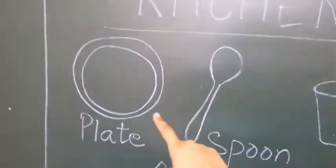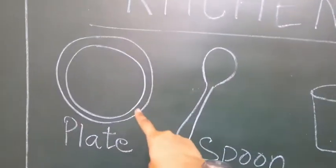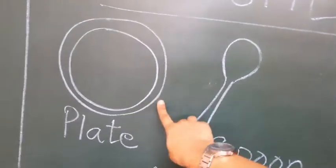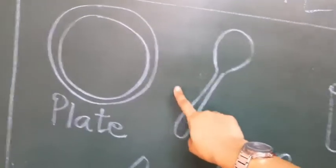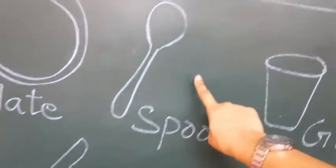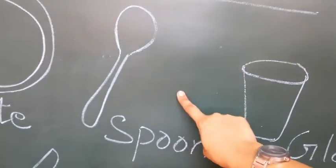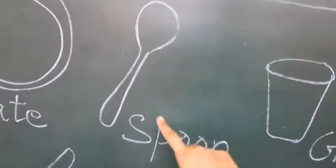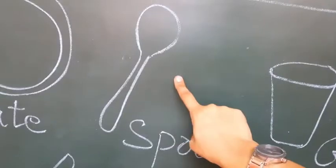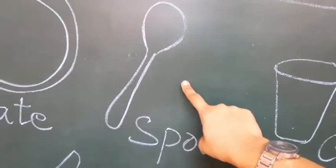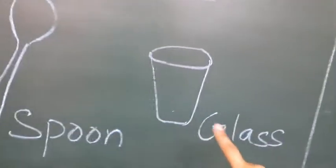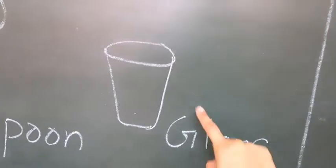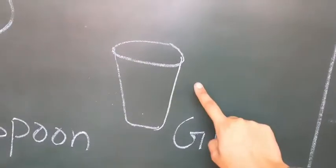The first thing is plate. This is a plate — you eat food in a plate. Next is spoon. You have food with a spoon. This is a spoon. Say spoon. Next is glass.